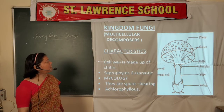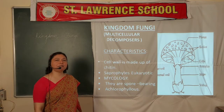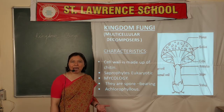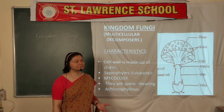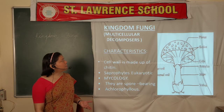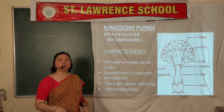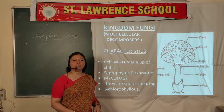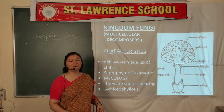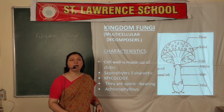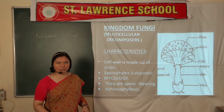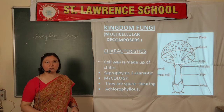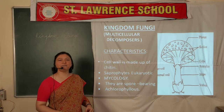In kingdom Monera, there were prokaryotes and unicellular organisms. In kingdom Protista, we have seen that they are one step ahead — they are eukaryotes having a well-defined nucleus as well as unicellular. Now we come to the third kingdom, that is kingdom Fungi.